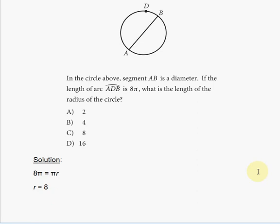In the circle above, segment AB is a diameter. If the length of arc ADB is 8π, what is the length of the radius of the circle?